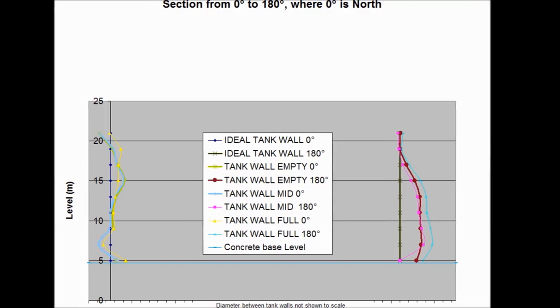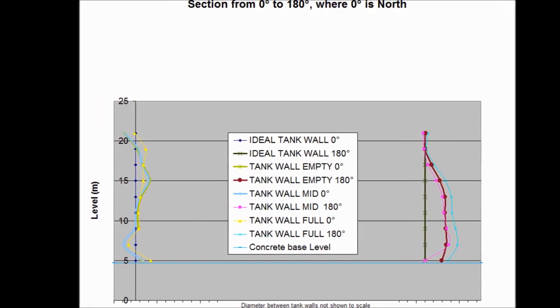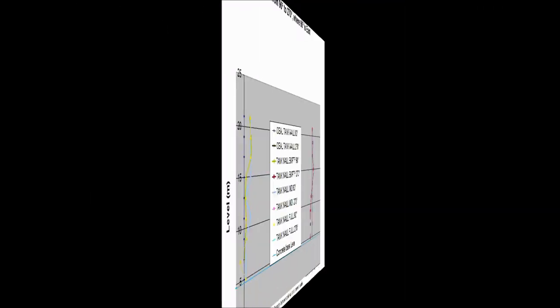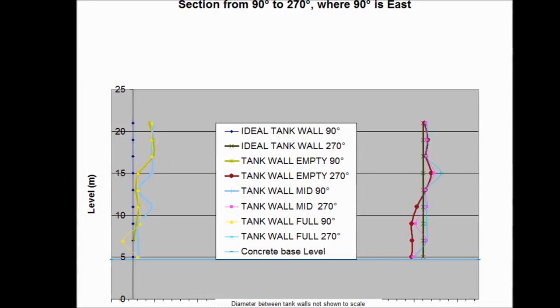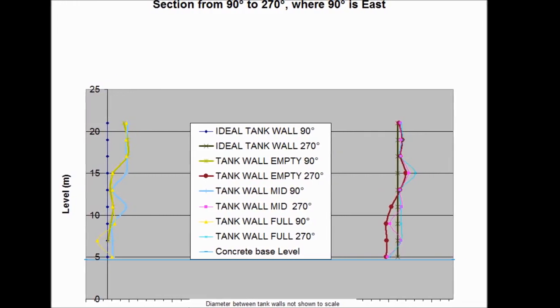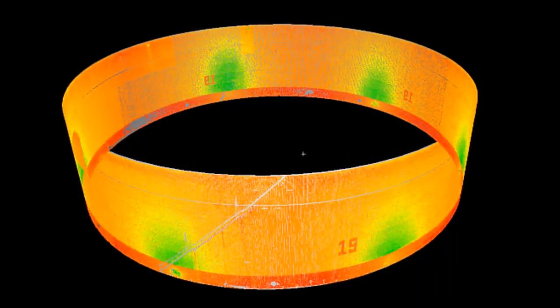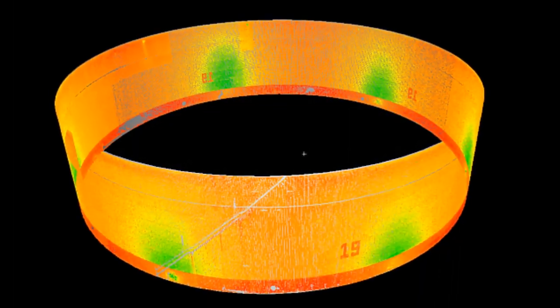These graphs show the variation in verticality throughout the tank wall's height. We create a section from 0 to 180 degrees, and also at 90 to 270 degrees. This allows us to report the vertical angle north-south and east-west.